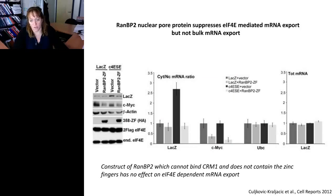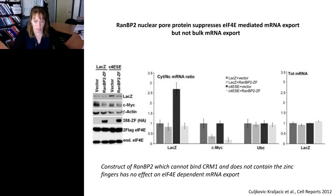Let's explore this further. RAN-BP2, this nuclear pore protein important to the cytoplasmic fibril — we asked whether it has an RNA export role and what evidence supports our model. RAN-BP2 suppresses 4E-mediated RNA export but does not touch bulk RNA export, so this is specific. Taking two types of RNAs — plain LAC-Z RNA or LAC-Z RNA containing our 4E sensitivity elements, which makes it sensitive to EIF4E — and overexpressing a specific zinc-finger-containing part of RAN-BP2 required for interaction with the nuclear export receptor CRM1.